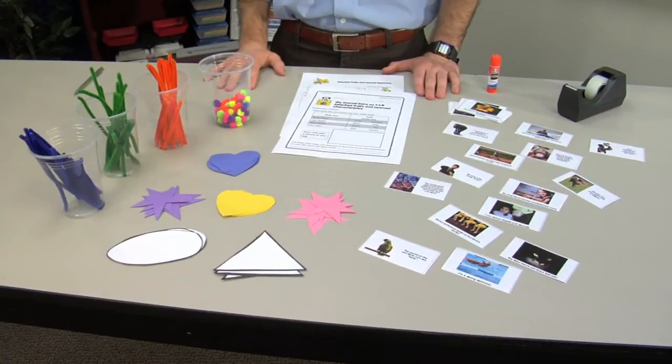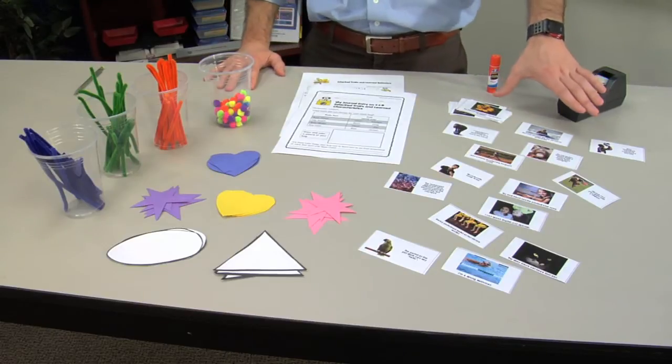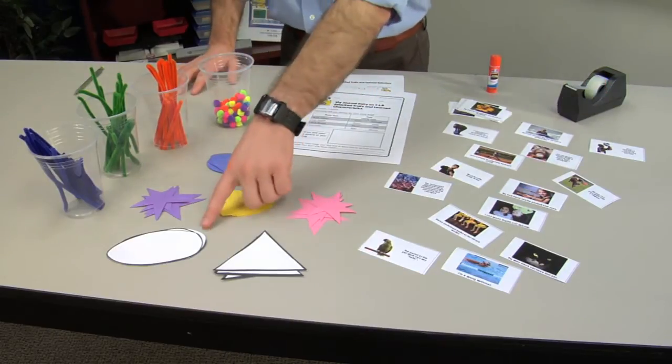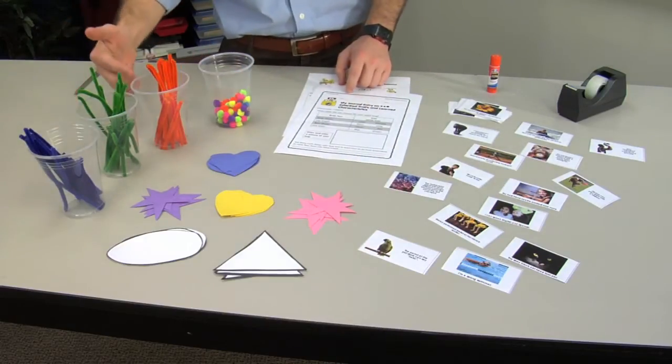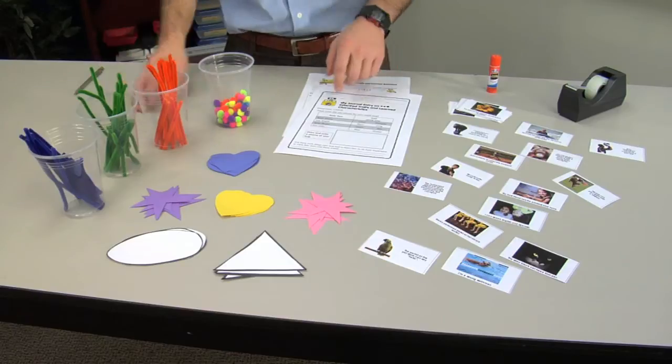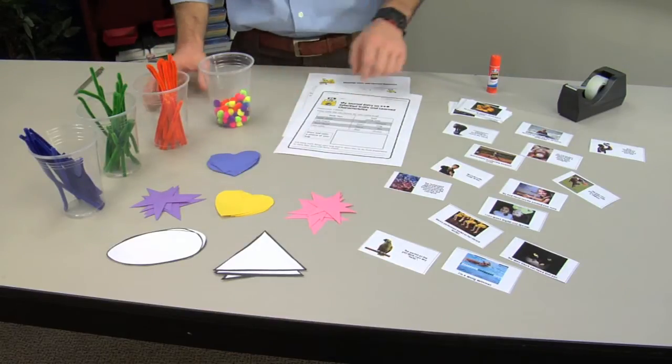Prepare the following items in advance for each group in your class: a set of trait cards, various insect-building materials like body shape cutouts using index cards, pipe cleaners for legs in various colors, spot shape cutouts using construction paper, and palms for eyes.